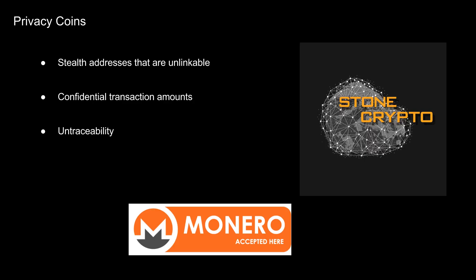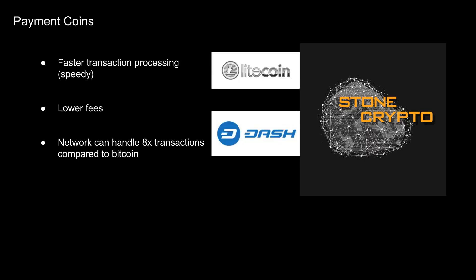Next up we have privacy coins. Monero is one of the more popular privacy coins and is in the top 10 by market capitalization. Unlike Bitcoin, which provides publicly viewable addresses, Monero addresses are private, stealth, and unlinkable. When you send a transaction through the Bitcoin network, the address and transaction amount are both viewable. With Monero, all transaction amounts are confidential — privacy coins are meant to be untraceable back to the sender and recipient.